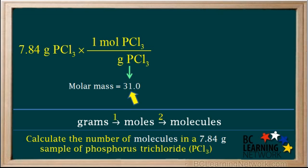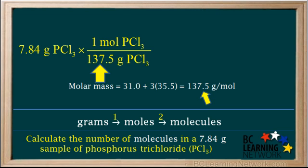And by the grams, we need to write the molar mass of PCl3. The atomic mass of phosphorus is 31.0 grams per mole, and we add 3 times 35.5 for the three chlorine atoms, which gives us a total of 137.5 grams per mole for the molar mass. So we write 137.5 by the grams of PCl3.